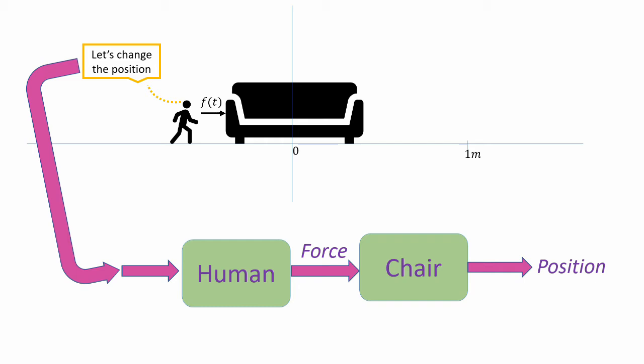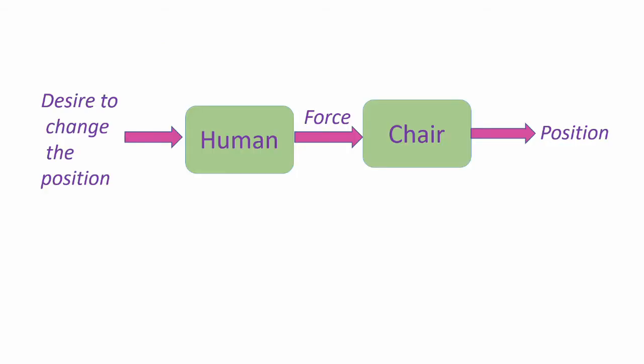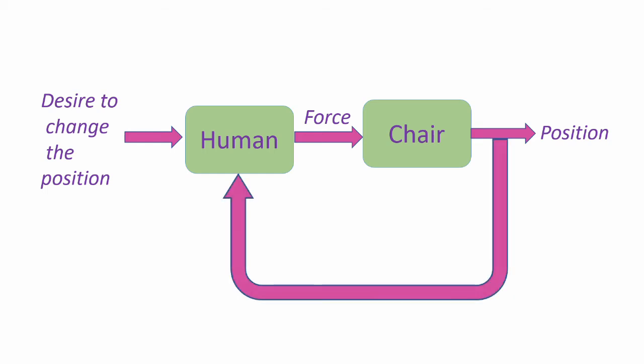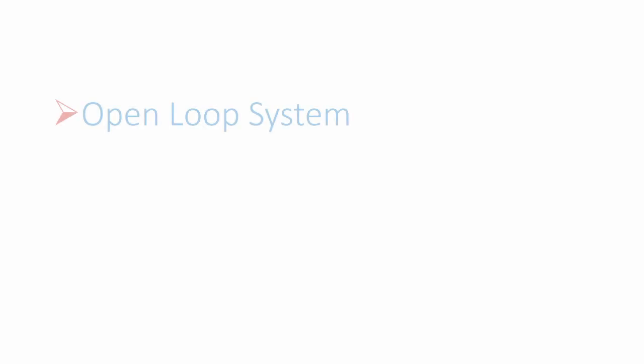Now, if we consider the fact that the person is continuously monitoring whether or not the position has been reached, we can add a feedback element to this block diagram. That is, the position of the chair is continuously monitored by the human and he is producing a force according to that. So now this system has become a closed loop system. Basically, all control systems can be classified into two: open loop systems and closed loop systems.